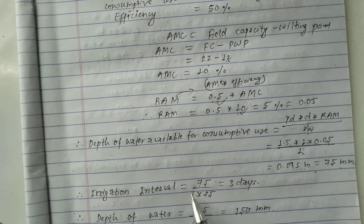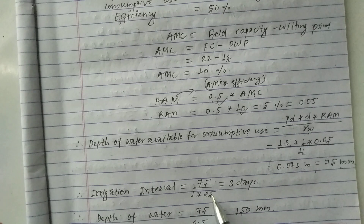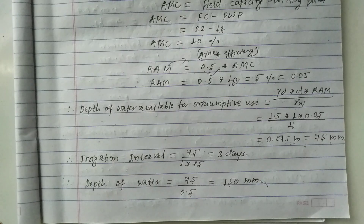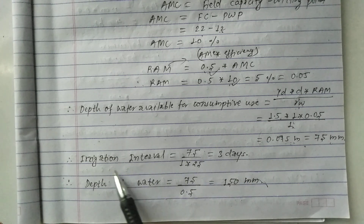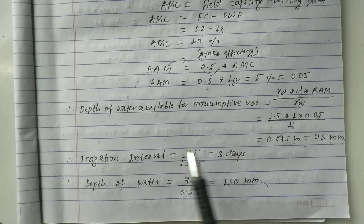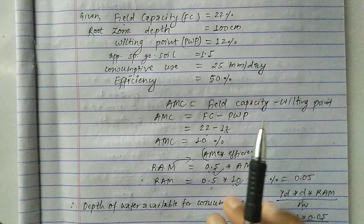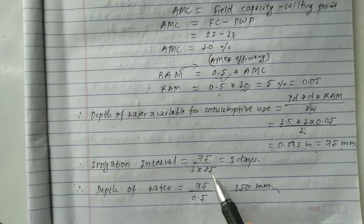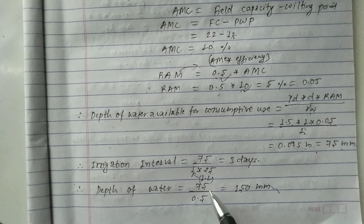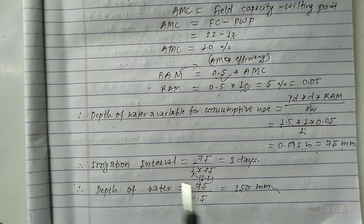The irrigation interval = depth of water available / consumptive use = 75 mm / 25 mm per day = 3 days. This means we need to irrigate the land every 3 days. Sometimes a factor of 1.2 is applied depending on conditions, but here we use 1.